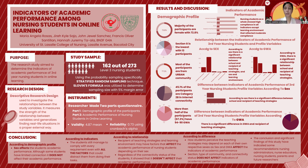For our results and discussion under demographic profile: according to sex, majority of the participants are female with 72.8%. According to sections, Section G is the lowest with 13 participants, while Sections A, C, and D have the most with 24 participants. According to type of community, most participants are from an urban community. According to internet connectivity, 45.1% of the participants belong to Category 2B, which is limited internet connectivity with mobile phones or gadgets. Lastly, according to GWA, specifically 67.3% have a GWA of 90 to 94.